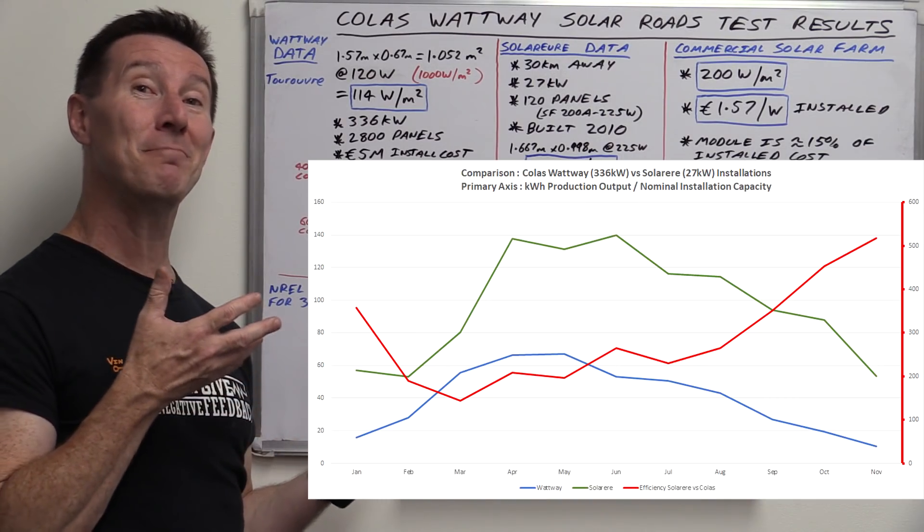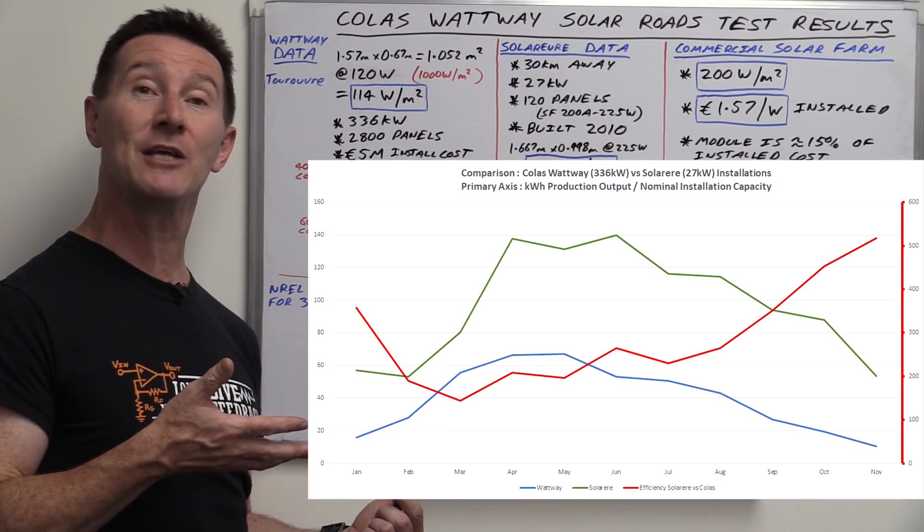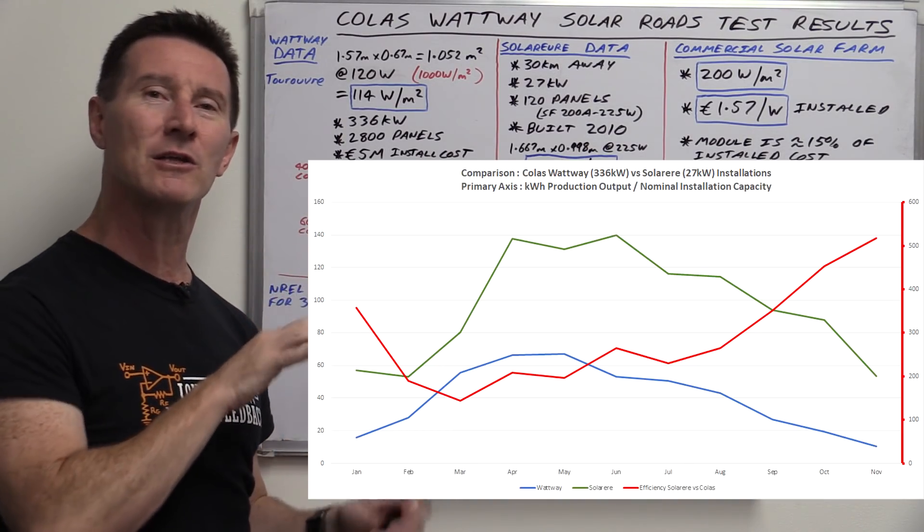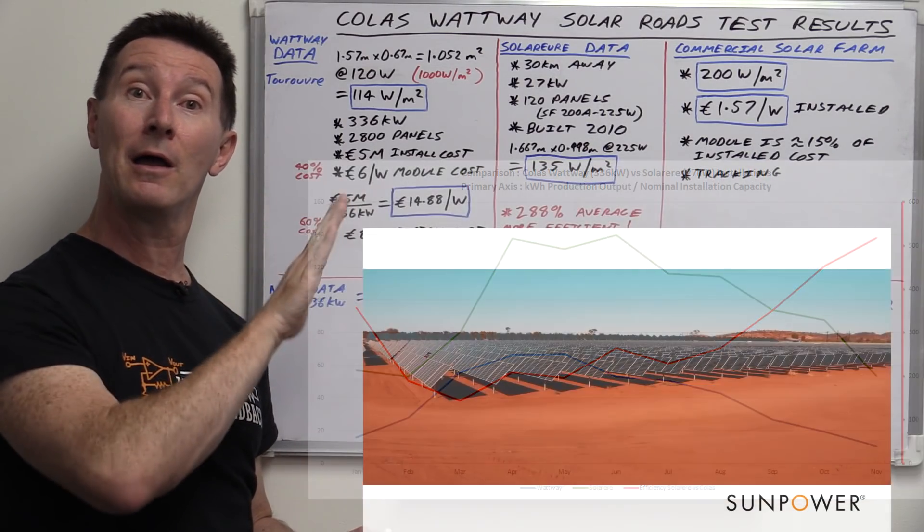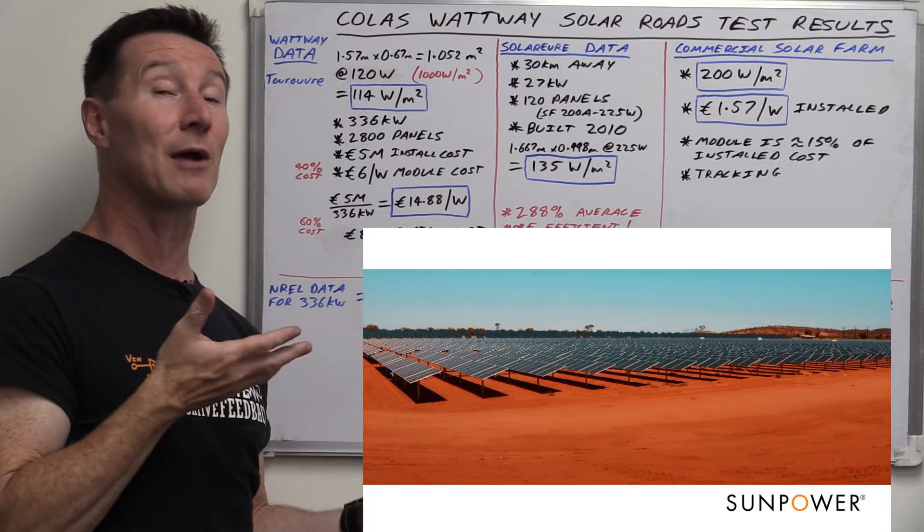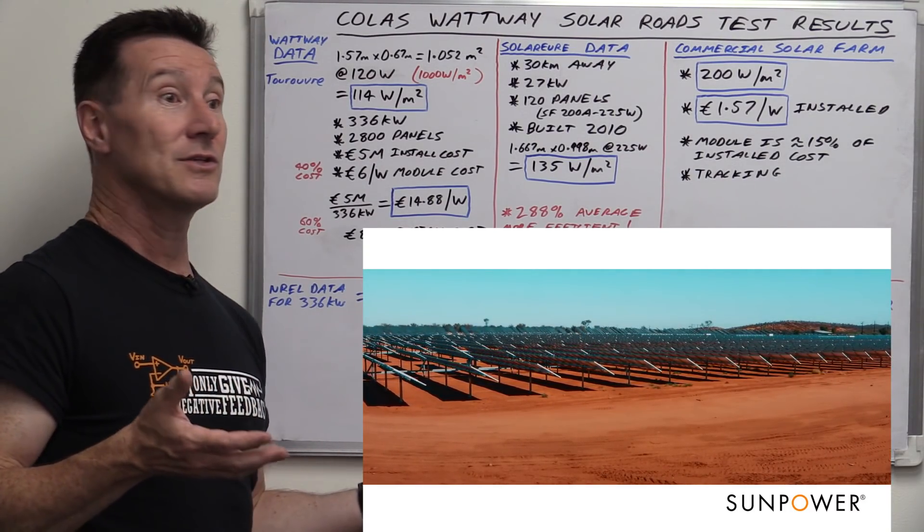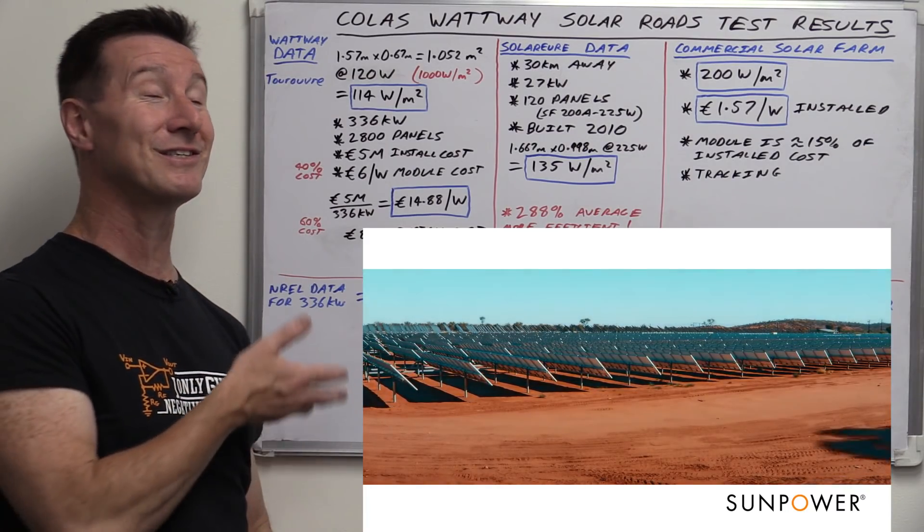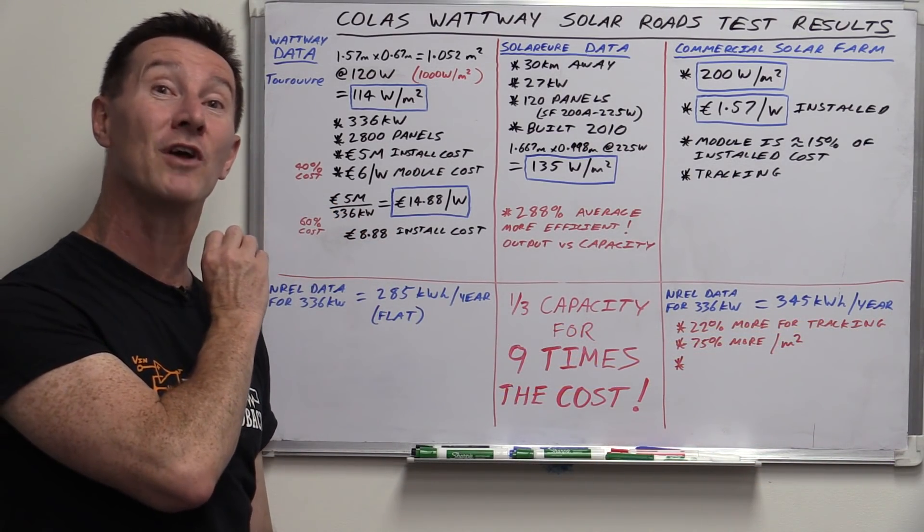And you've got to remember, this is compared to just a pretty average residential rooftop installation, just at some fixed angle. It's probably not optimum angle. It's just some thing, let alone a proper tracked commercial installation that would use better quality and more efficient panels. It's just, it's going to be much worse. This is just a real basic comparison. It's still not even close.